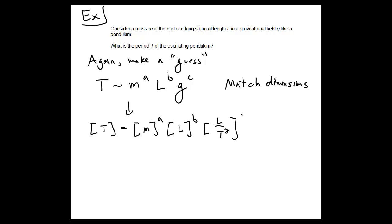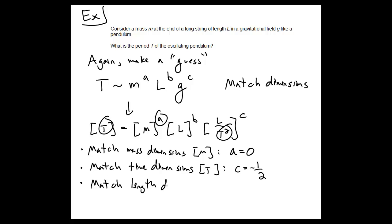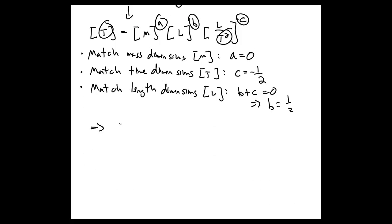We can rewrite our dimensional analysis problem and match dimensions. Matching mass dimensions, the only way for that to work is if a is equal to zero. Matching time dimensions, the only way this can work is if c is negative one-half. And matching length dimensions, the only way this can work is if b plus c equals zero. Using the fact that c is one-half, this tells us b has to be positive one-half.